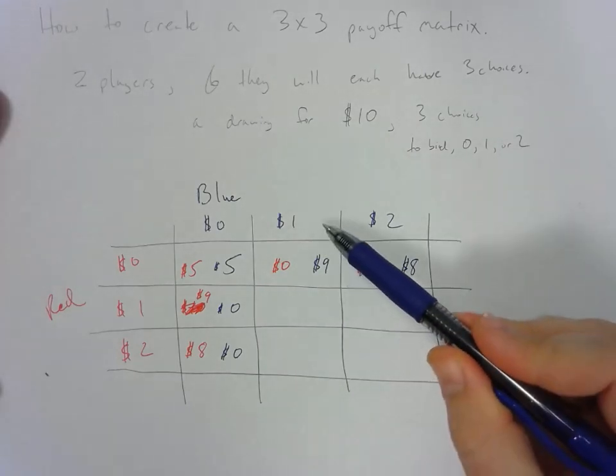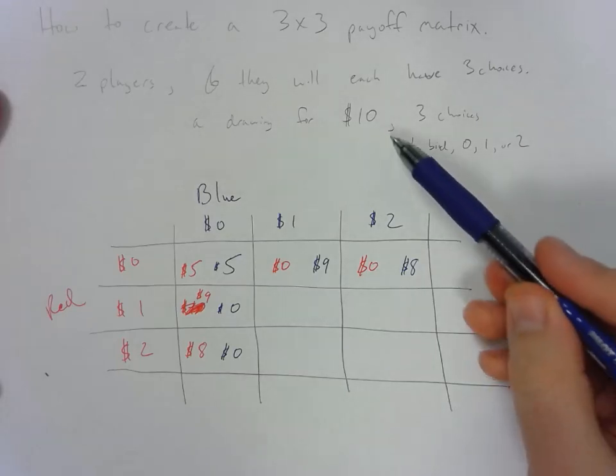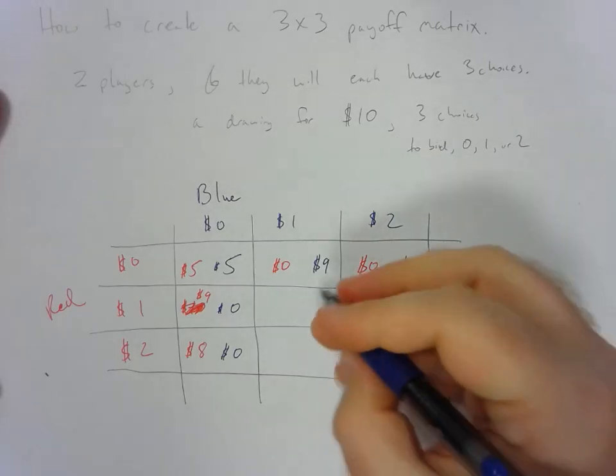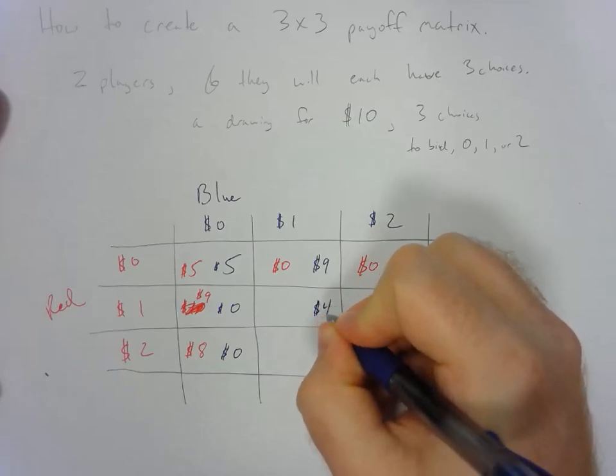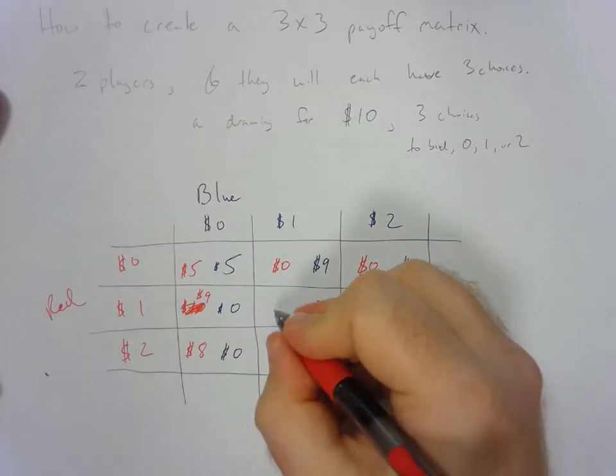Now let's look at the example where they both bid 1. Well they tie, and if they tie they split the 10 so they each get 5. That means we have blue ending up with $4 and red will end up with $4 as well.